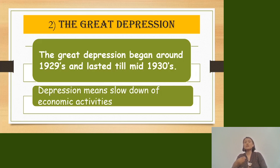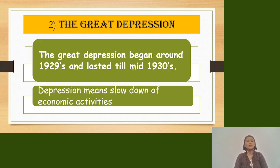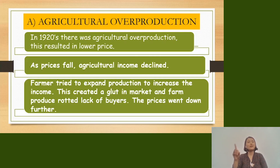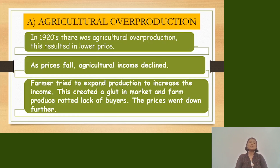The Great Depression was caused by two major problems: first, agricultural overproduction; and second, the withdrawal of US loans. We will discuss these two major causes one by one.